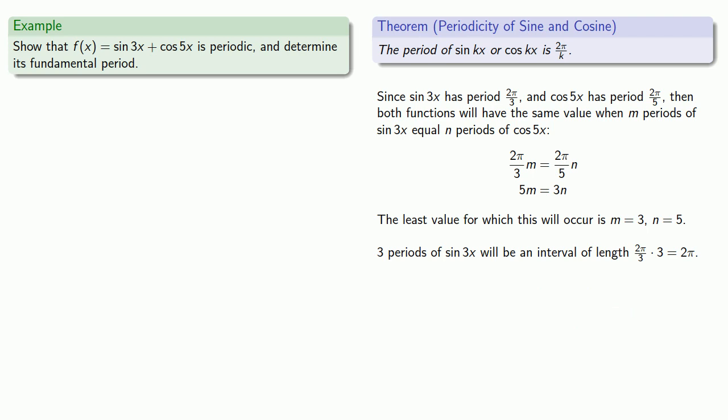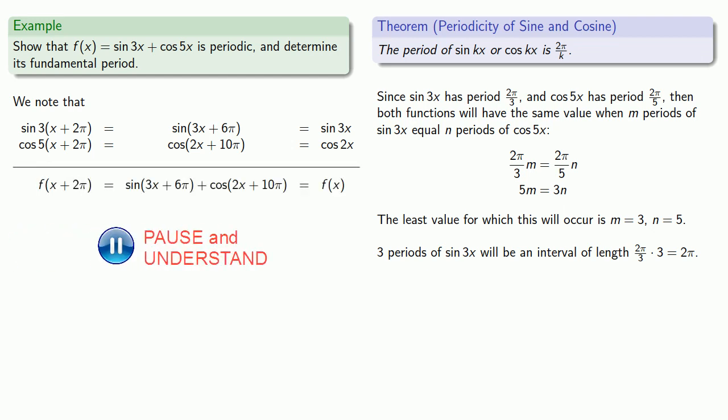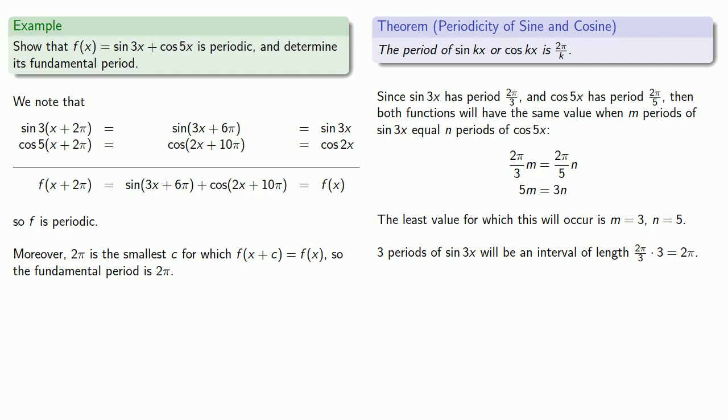We might summarize our results here. We note that sin(3(x + 2π)) = sin(3x + 6π) = sin 3x. Likewise, cos(5(x + 2π)) = cos(5x + 10π) = cos 5x. So f(x + 2π) = f(x). So f is periodic. Moreover, remember this is the least value for which this will occur. And so 2π is the smallest c for which f(x + c) = f(x).